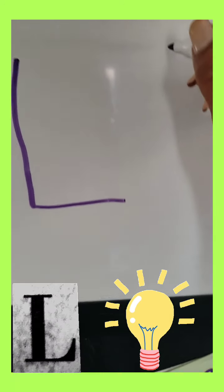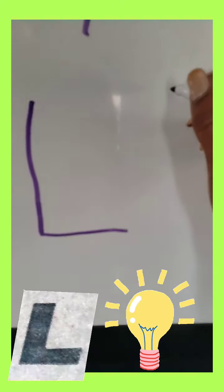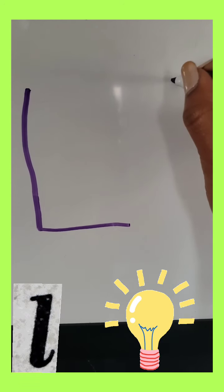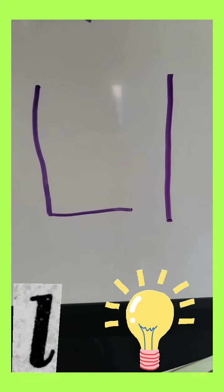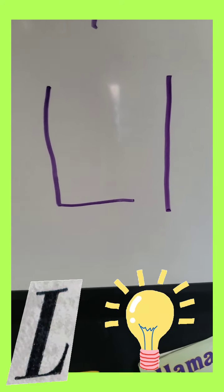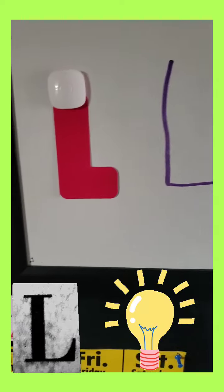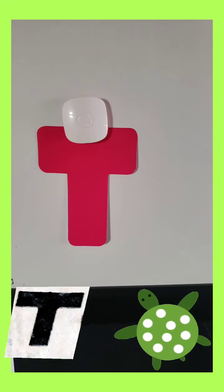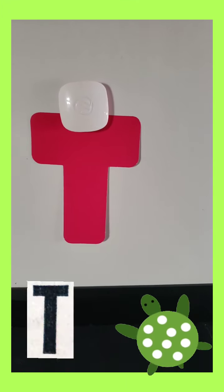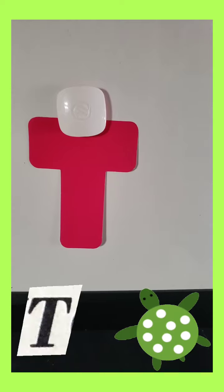And little L is just a line coming down. That's it. Next letter is the letter T.